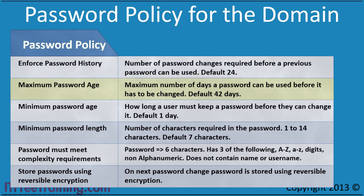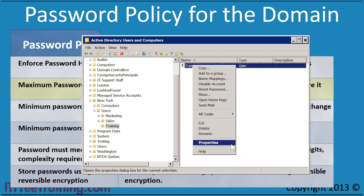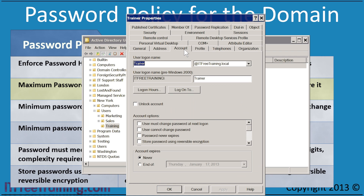The next setting, Maximum Password Age, determines the maximum number of days a user can use a password before they are forced to change it. If the user does not change the password before this, they will be forced to change it next time they login. If they are already logged in, they will find that they will not be able to access resources on the network. This setting can be particularly annoying for user accounts that are always logged in or for service accounts if the password is not changed in time. In Active Directory Users and Computers, on the account tab, when a user password is past the maximum password age, the tick box 'user must change password at next logon' will be ticked. If you wish to prevent a password on a user account from expiring, you will need to tick the tick box 'password never expires'. Settings configured here will override the settings configured at the domain level.